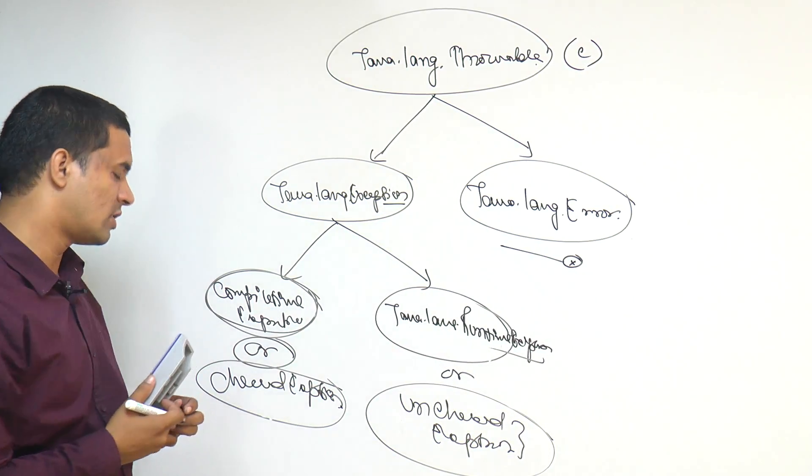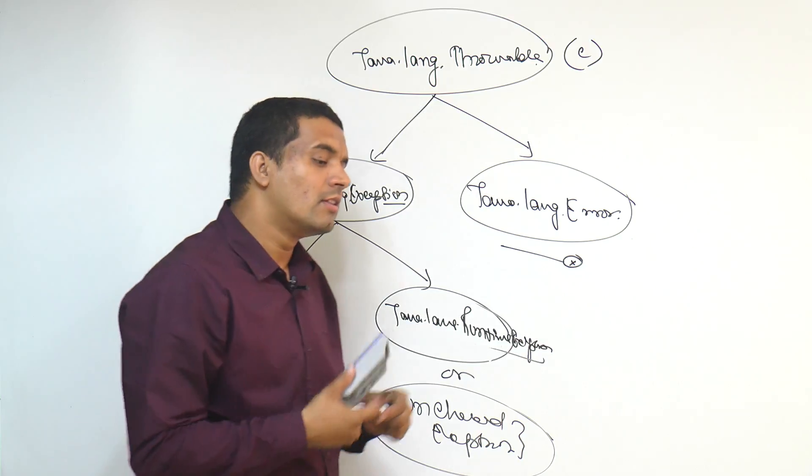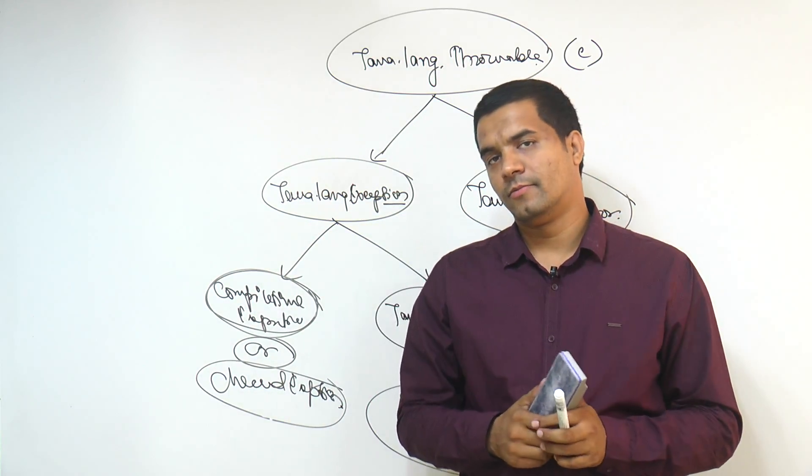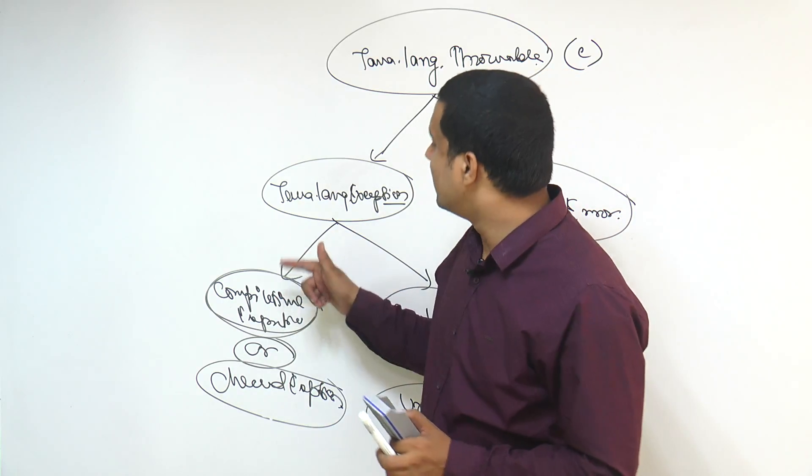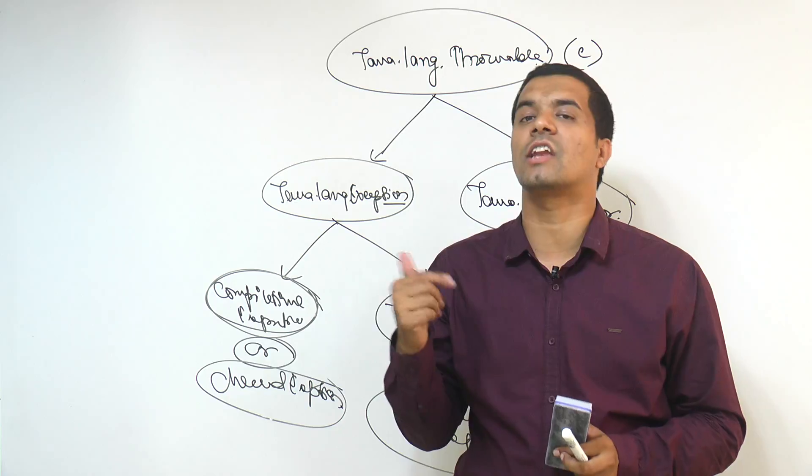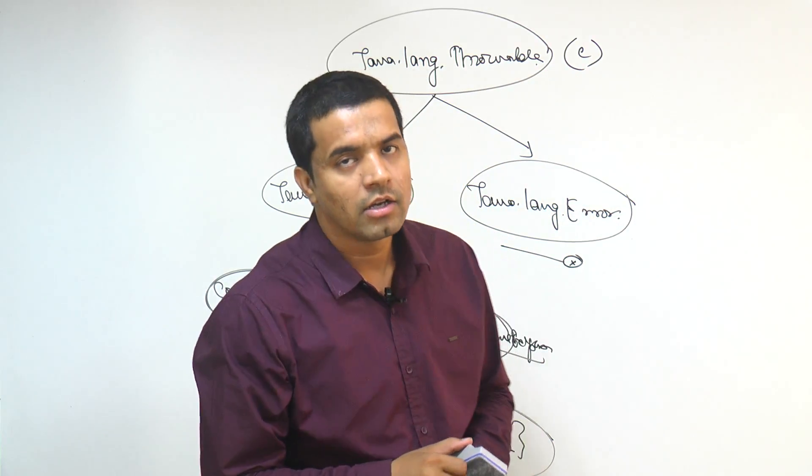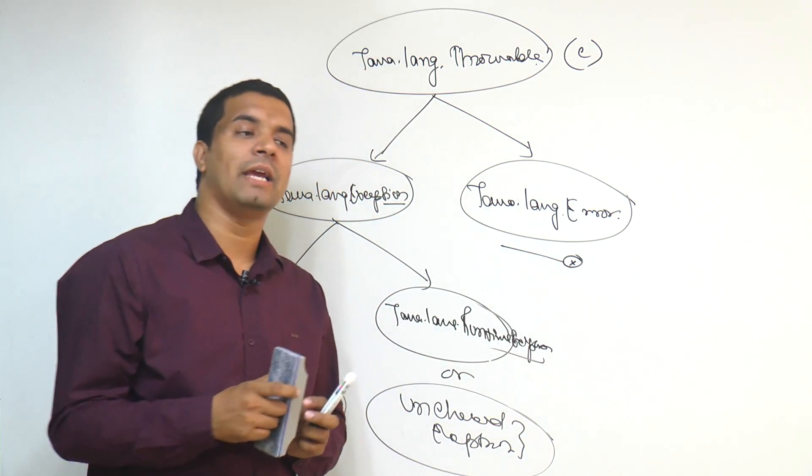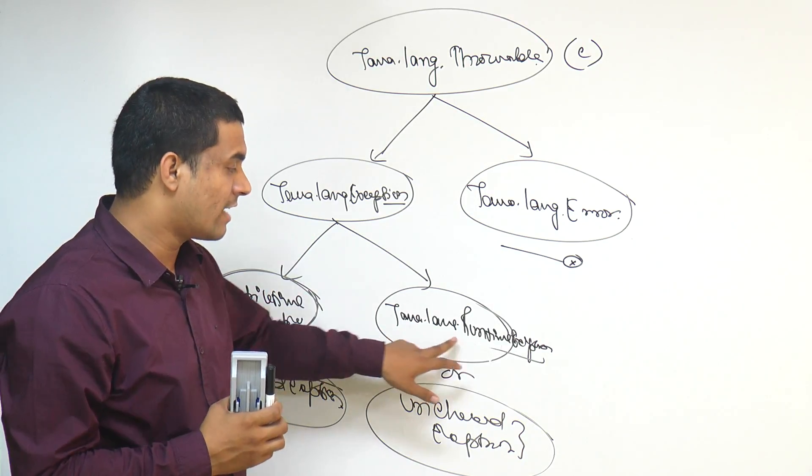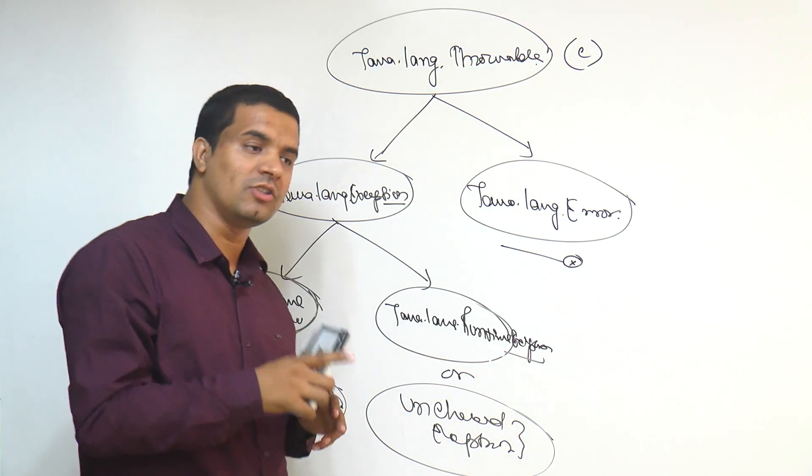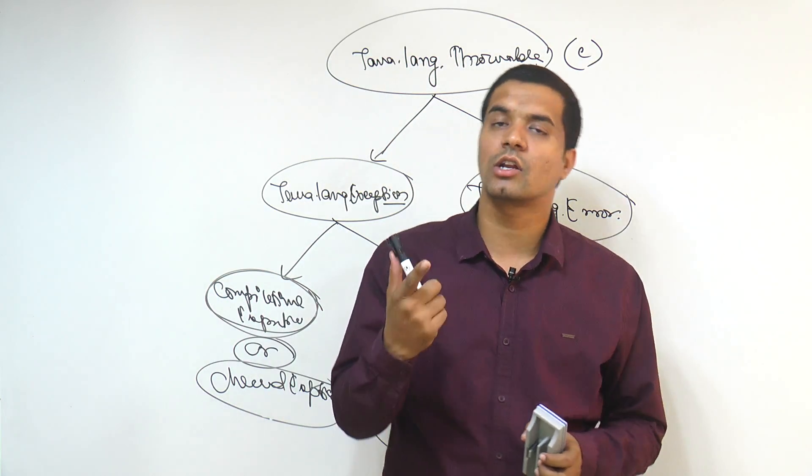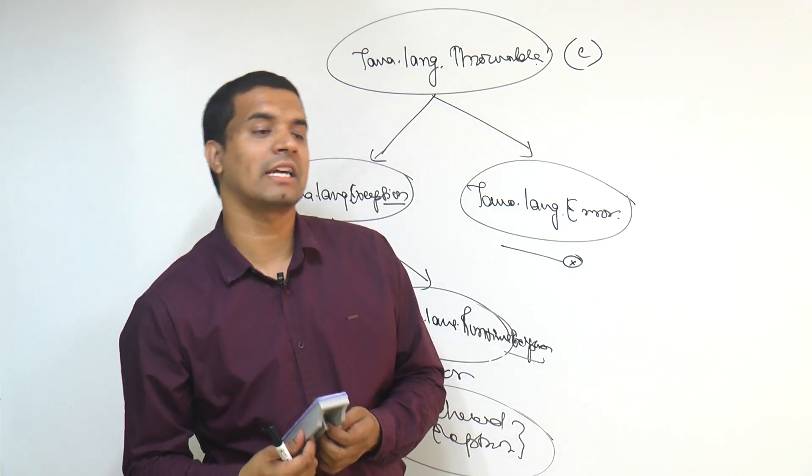One small thing which I am saying: the exceptions which are extending directly or indirectly java.lang.Exception class are called as compile time exceptions, except java.lang.RuntimeException. The exceptions which are extending java.lang.RuntimeException are called as the runtime exceptions.